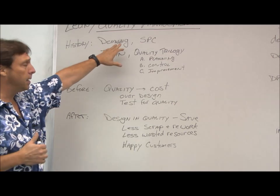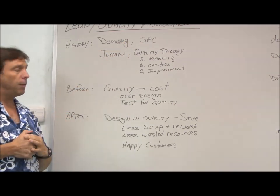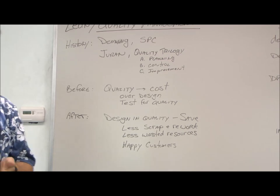Deming was famous for Statistical Process Control, or SPC. Duran is famous for his quality trilogy of quality planning, quality control, and continuous improvement.